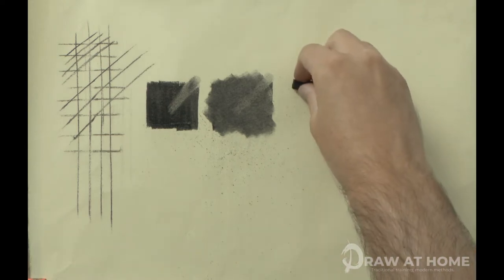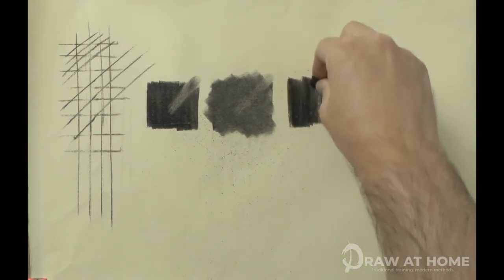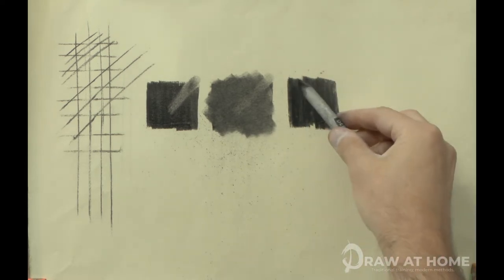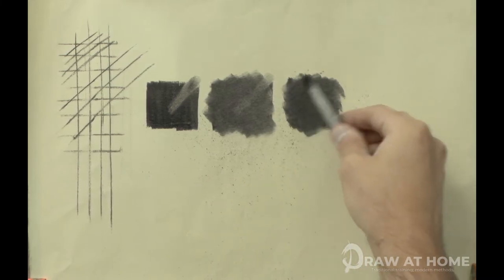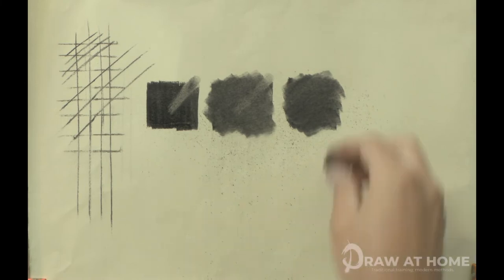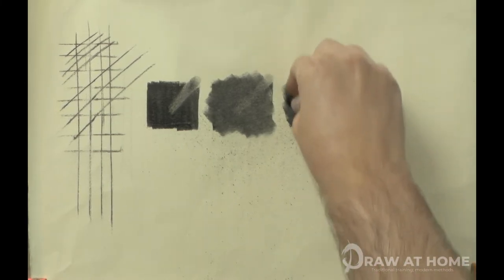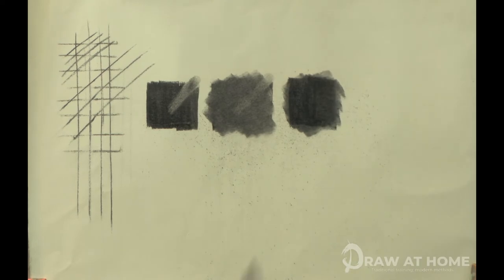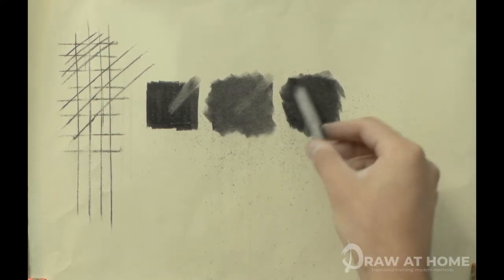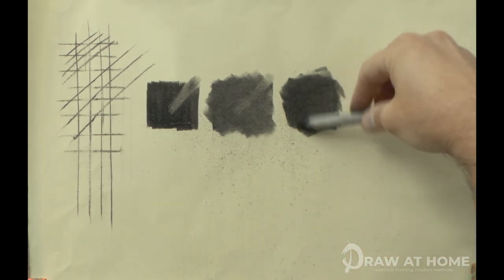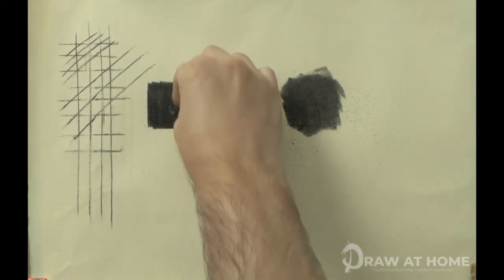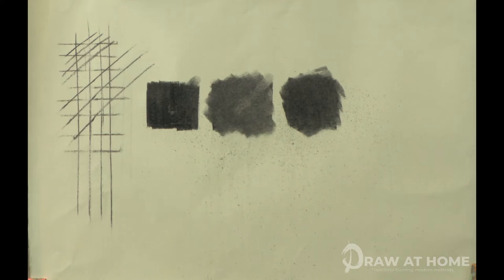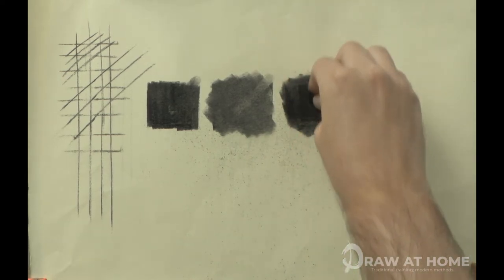In this third patch of charcoal, repeat the process of adding charcoal and then using the stump, but this time add another layer of willow charcoal on top. And then re-stumping that area. You will see this process of reapplying the charcoal and using the stump gives a slightly lower value than when you just used the stump on its own. Angra paper can take a lot of punishment, so see how dark you can get it by adding charcoal and using the stump to push it into the paper.